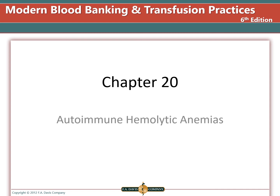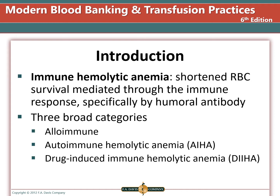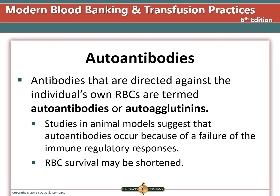Autoimmune hemolytic anemia is an anemia caused by a person's antibodies that attack their own cells, causing a decreased survival of red blood cells. Immune hemolytic anemia shortens red blood cell survival and is caused by an immune response — specifically humoral or antibody-mediated immunity. This can be caused by alloantibodies, autoimmune hemolytic anemia, or drug-induced immune hemolytic anemia. This chapter covers the autoimmune hemolytic anemias.